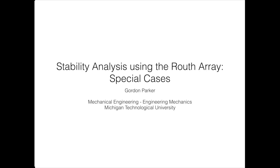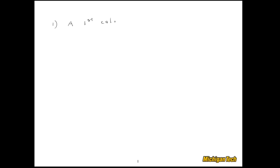Hi, this is Gordon Parker from Michigan Tech. In this video we're going to look at stability analysis using the Routh array for a couple of special cases — Special Case 1 and Special Case 2. In Special Case 1, a first column element is zero. In Special Case 2, an entire row of the Routh array is zero. In both cases the system will be unstable, with poles outside the left half plane.